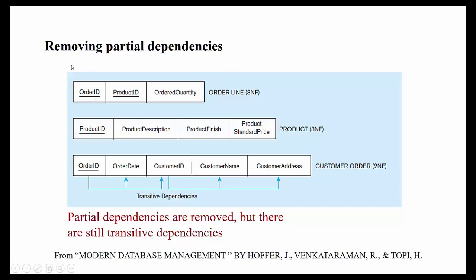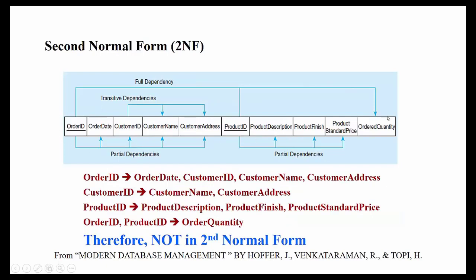To get Second Normal Form, we move each partial dependency into a new relation. So we have: order ID, order date, customer ID, customer name, and customer address in one relation; product ID, product description, product finish, and product standard price in a second relation; and order ID, product ID, and order quantity in a third relation. This removes redundancy — product information no longer needs to be repeated for every order row.